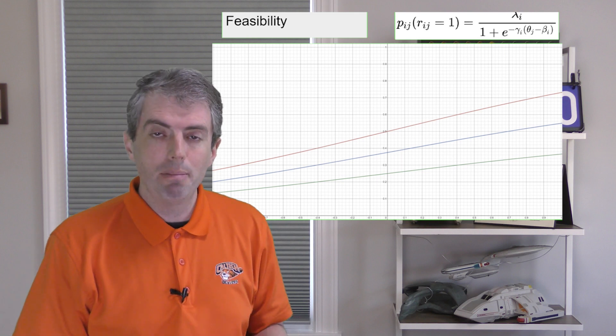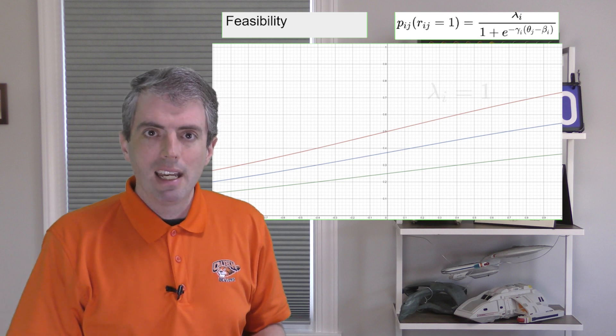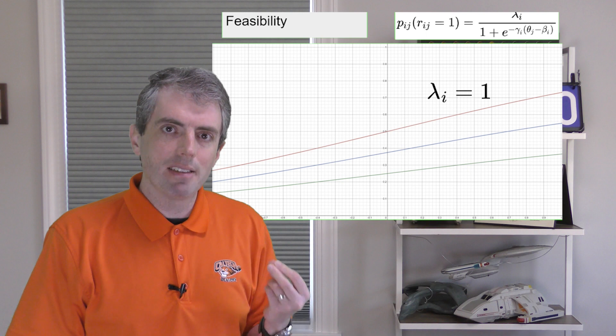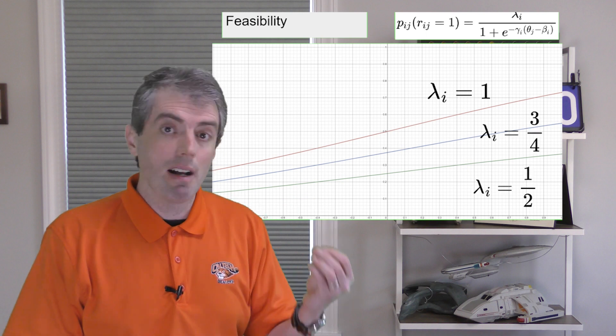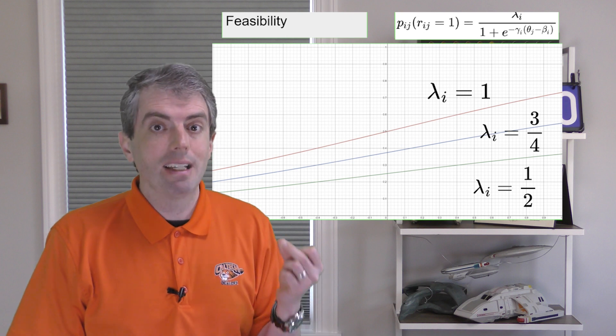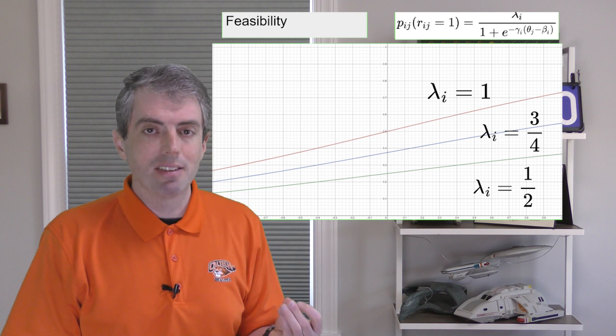It's just a linear scaling that squishes down the maximum value the probability can take on. The normal logistic curve on top, lambda equals one, gets squished as lambda gets smaller and smaller. If lambda equals one half, then no matter how smart you are, it's basically a coin flip whether you can answer the question.